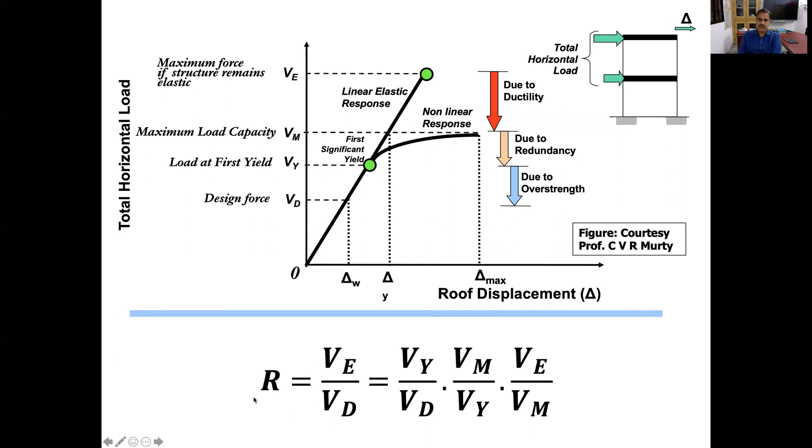If you look at this equation given below, VE by V design is the response reduction factor, which is constituted by three terms: V yield by V design, which is due to over-strength inherent in the structure; second term Vmax by V yield, because of the redundancy present in the structure; and third term VE by Vmax, due to ductility present in the structure.